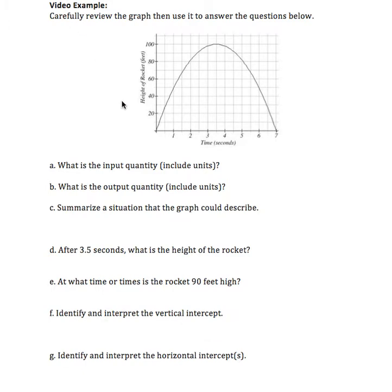Let's start by getting a sense of and understanding the quantities represented in our graph. The horizontal axis represents time in seconds, ranging from 0 to 7 seconds. The vertical axis represents the height of a rocket in feet, starting at 0 feet and going up to 100 feet.